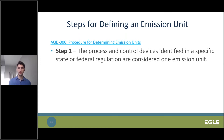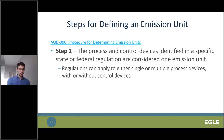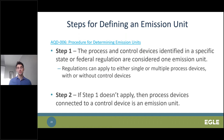Regulations can be applicable to a single process device — for example, Rule 611, which covers existing coal cleaners — or applicable to multiple process devices, like Rule 621, which covers existing metallic surface coating lines. If Step 1 doesn't apply, then a process device or multiple devices connected to a common control device or controlled by the same work practice is considered one emission unit — for example, three grinders connected to a cyclone collector.